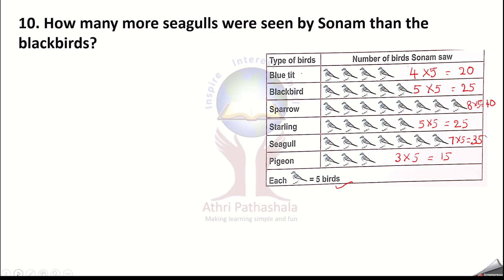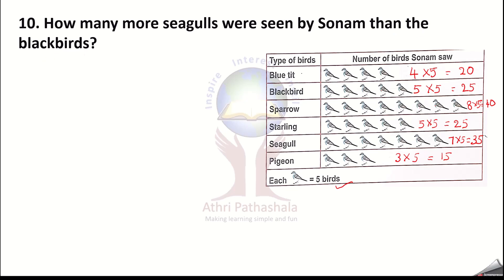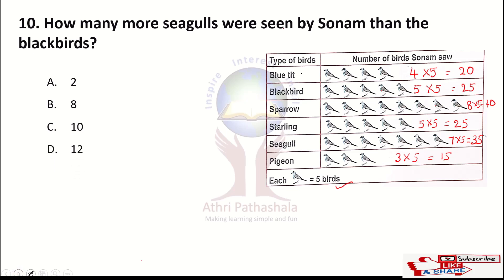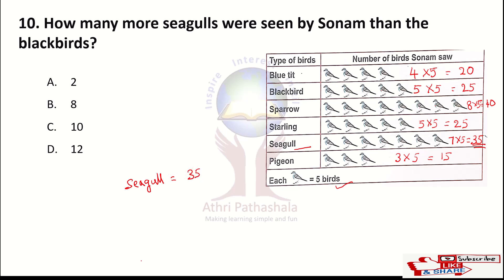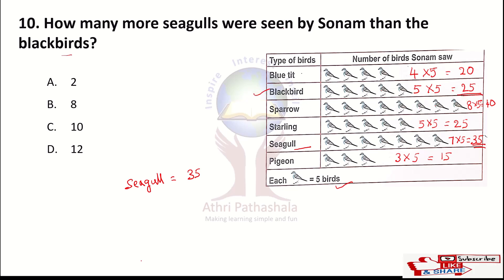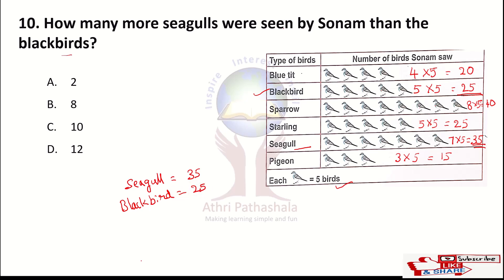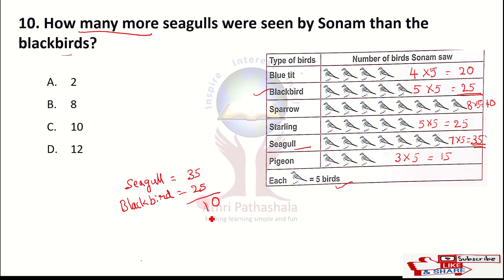Question 10: how many more seagulls were seen by Sonam than the blackbirds? Seagulls: 35 birds. Blackbirds: 25 birds. Since the question asks how many more, we subtract: 35 minus 25 equals 10. Option C is the correct answer.